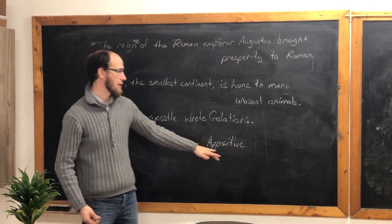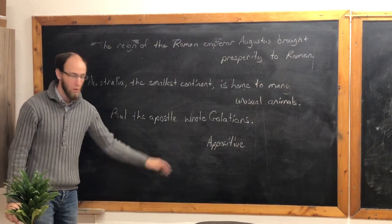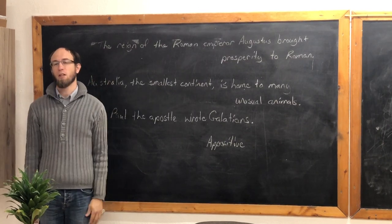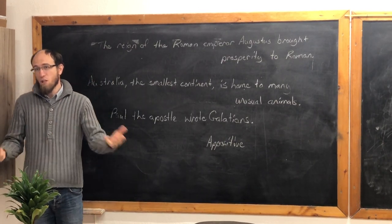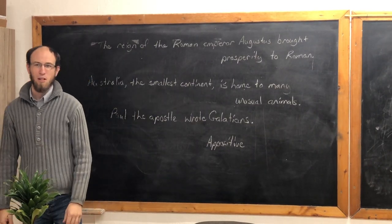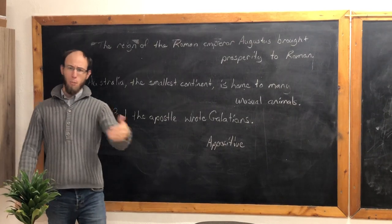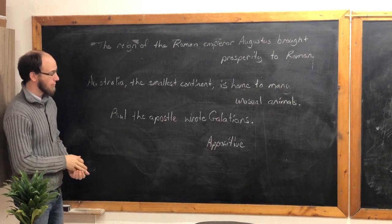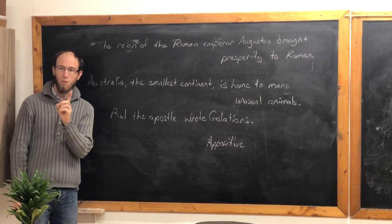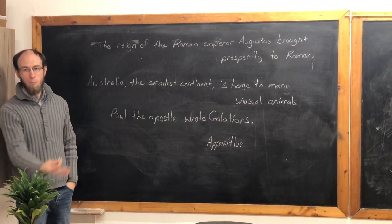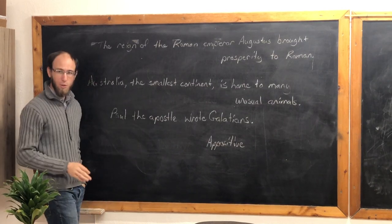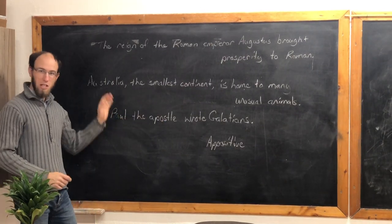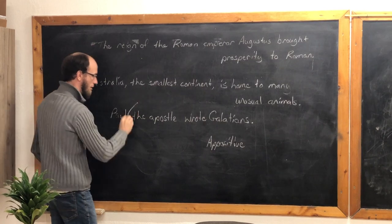My favorite appositive, because it sounds kind of like the word 'appositive,' is 'apostle.' Paul the apostle wrote Galatians. So when you hear 'appositive,' think of the apostle Paul. Many times people say 'the apostle Paul wrote' rather than just 'Paul wrote.' The appositive is always the second one — always the second one. Paul and apostle are talking about the very same person. We could just say 'the apostle wrote Galatians' or 'Paul wrote Galatians.' It's like we're stuttering, repeating something. The second thing is the appositive.